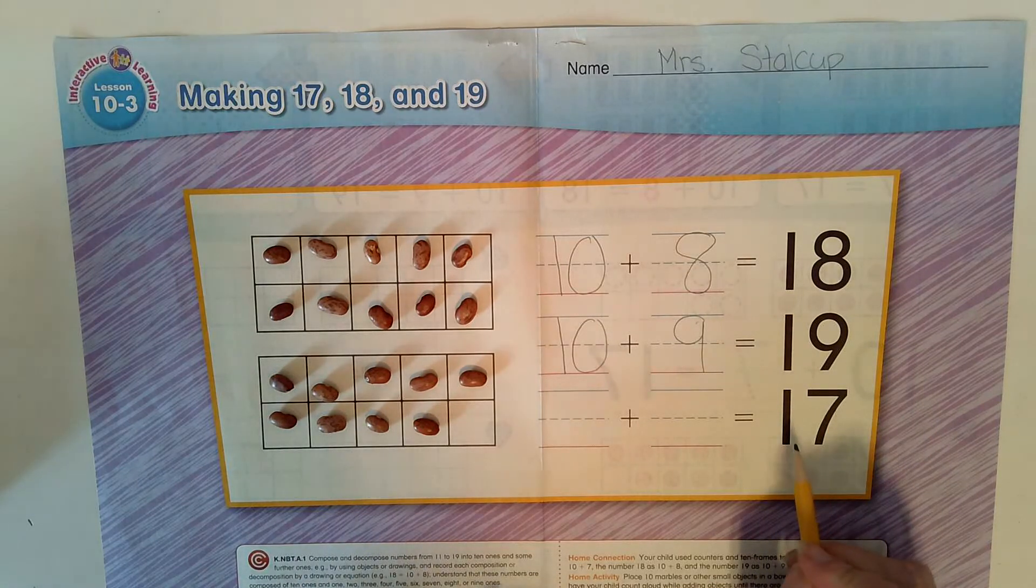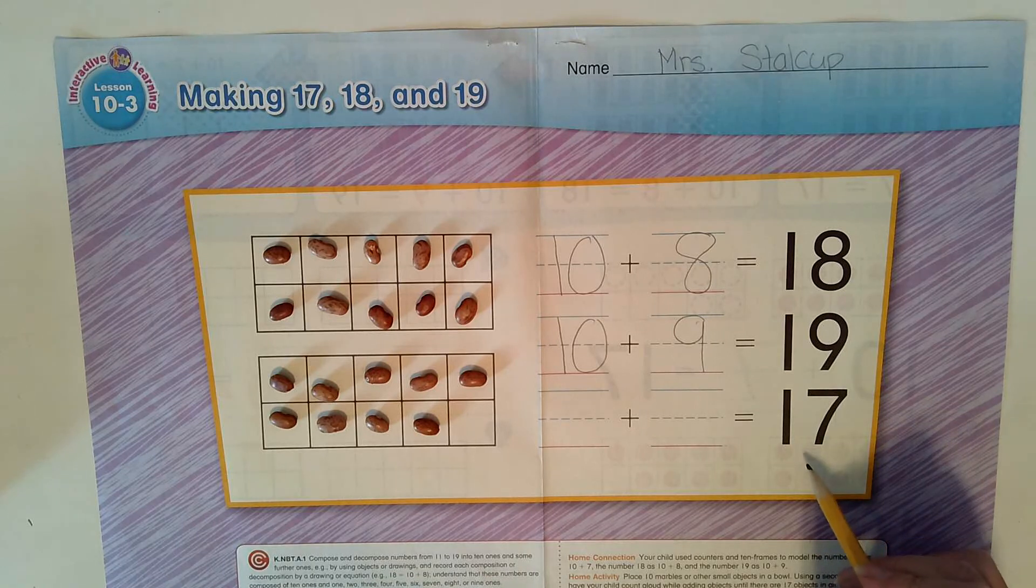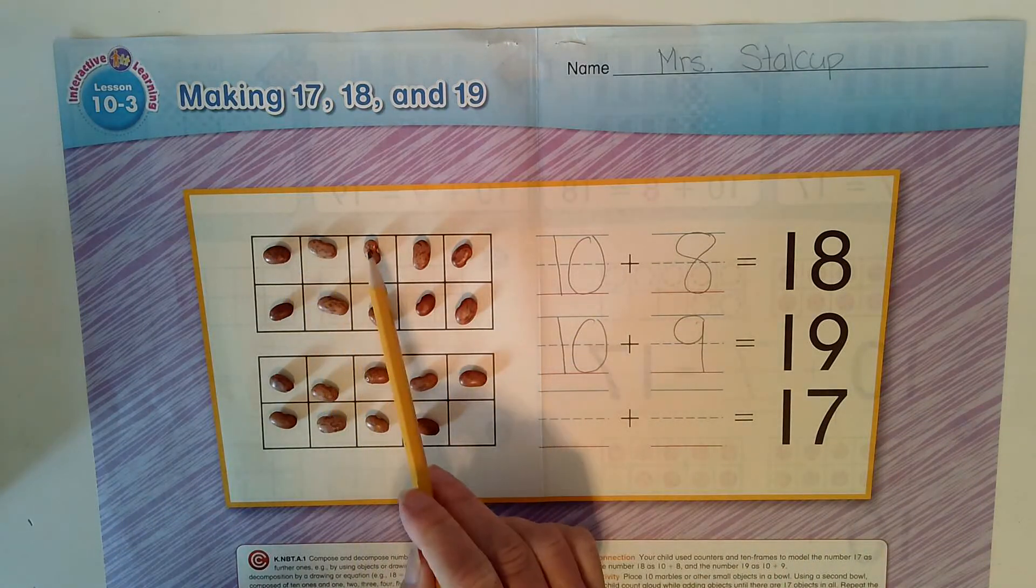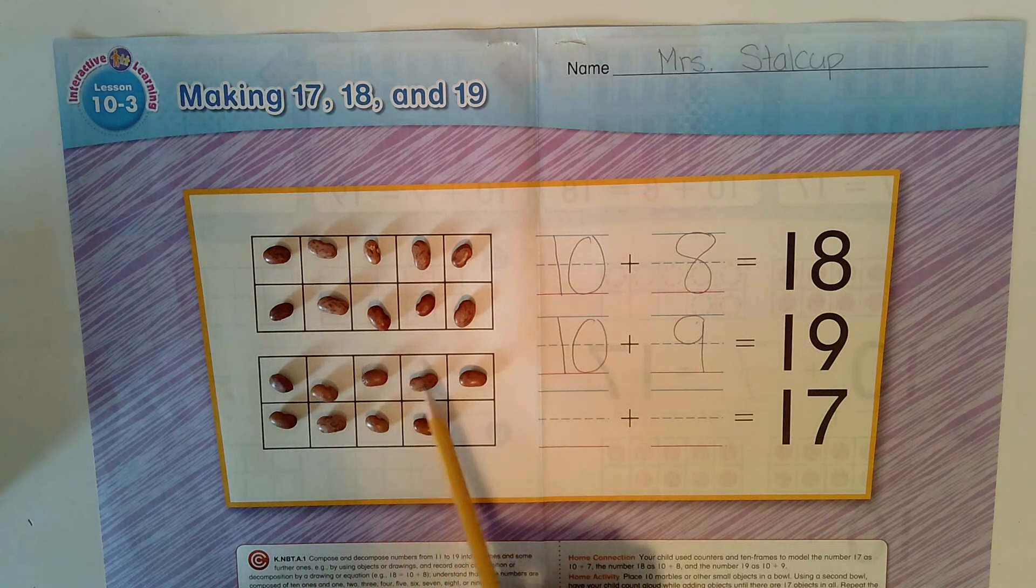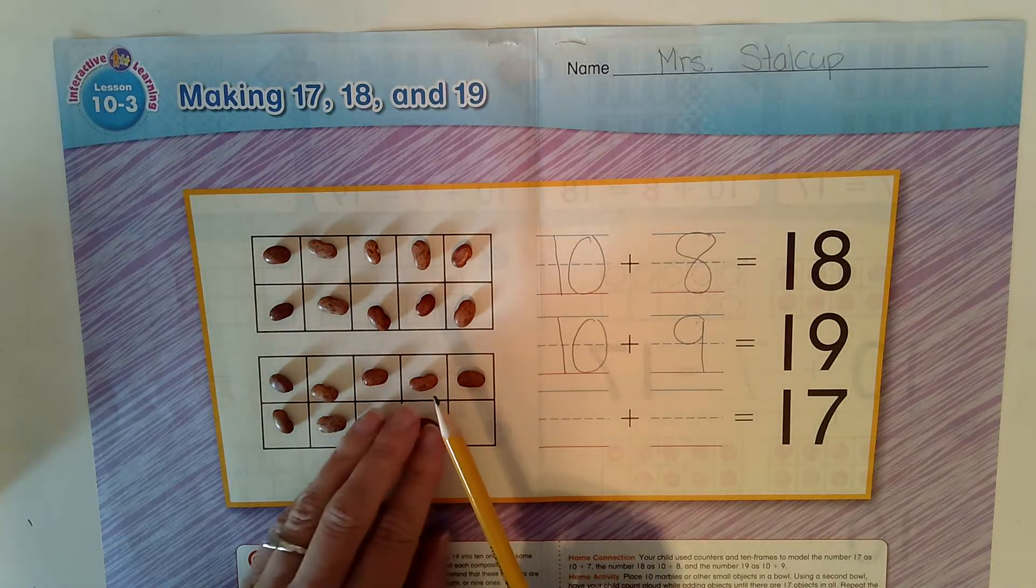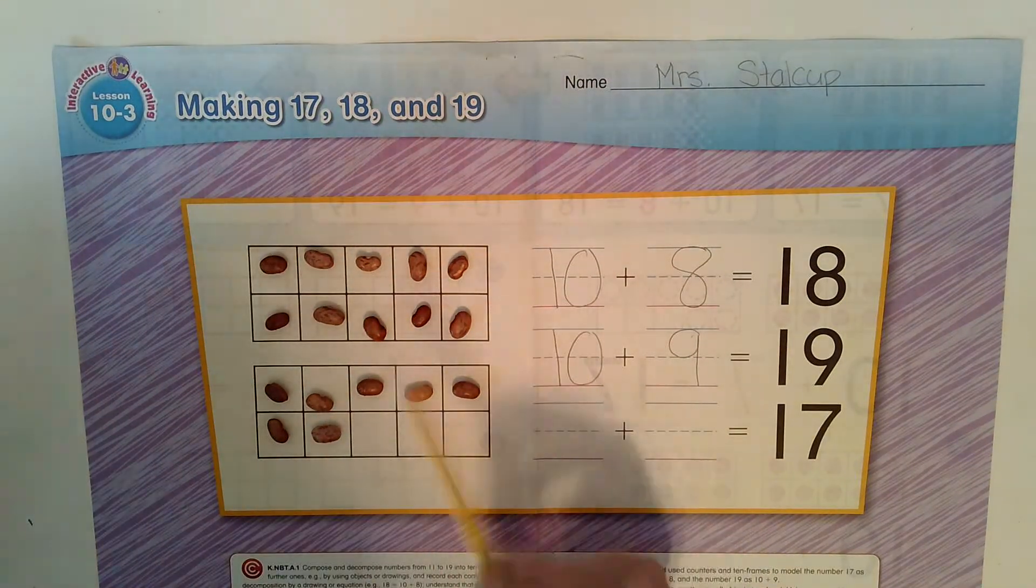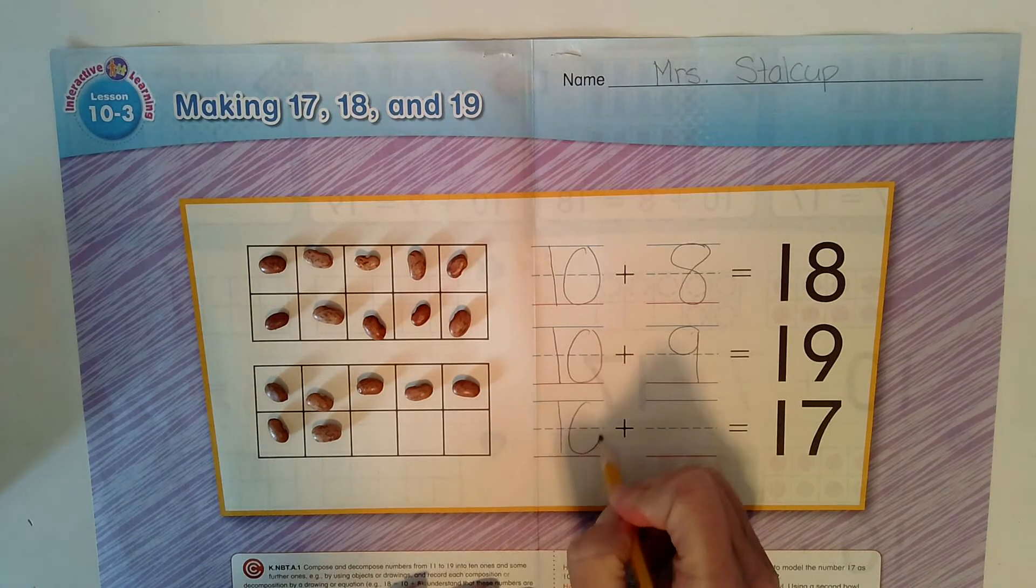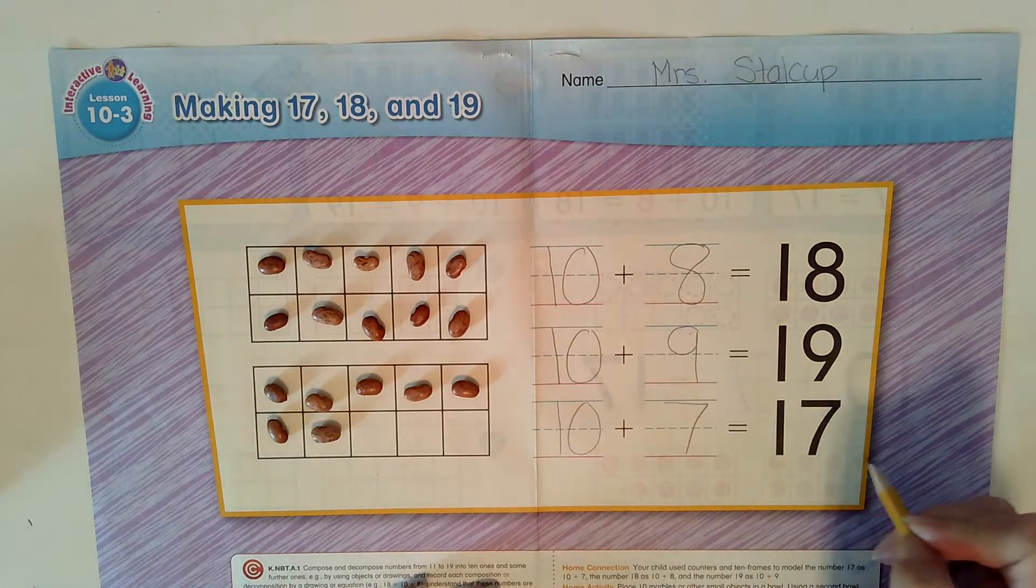Ooh, this number is a little bit less than 18 and 19. What number is this? 17. So we need to take some beans off. Let's figure it out. 1, 2, 3, 4, 5, 6, 7, 8, 9, 10, 11, 12, 13, 14, 15, 16, 17. So I don't need these guys. So what do we have here? 10 plus 7 equals 17.